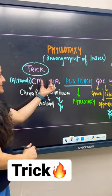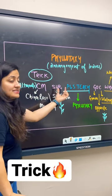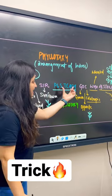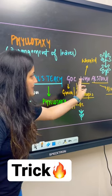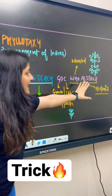So here, from CM Sir, C is for China rose, M is for mustard, Sir is for sunflower. Then 'please teach' is for phyllotaxy. You guys can see here GOC - Guava opposite Calotropis, and who means world, Alstoni means Alstonia.